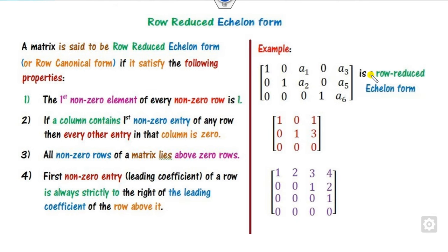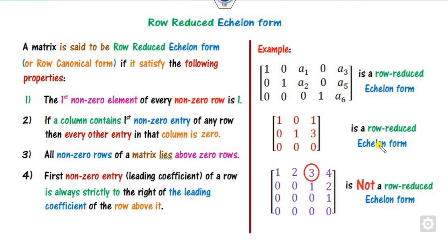So this is the row reduced echelon form. Is this one also a row reduced echelon form? The first non-zero element is 1, and all values above and below are 0 — yes, this is also row reduced echelon form. But another matrix is not, because its first non-zero element has non-zero entries above and below it, violating the second property.